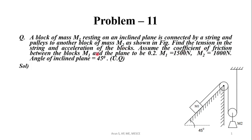Assume the coefficient of friction between block M1 and the plane to be 0.2. Given M1 is 1500 N, M2 is 1000 N, and angle of inclined plane is 45 degrees.